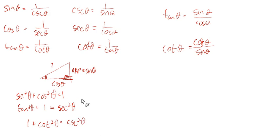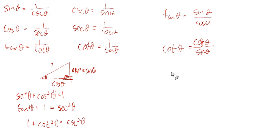So these three are the Pythagorean identities, these are the reciprocal identities, and these are the quotient identities. We'll use all these facts to solve some triangles and some real-world problems and word problems. We'll do that in the next video. Thanks for watching.